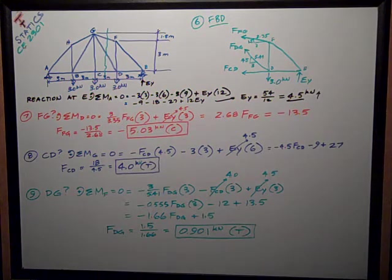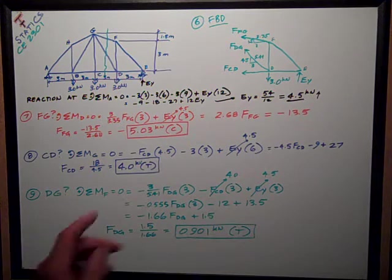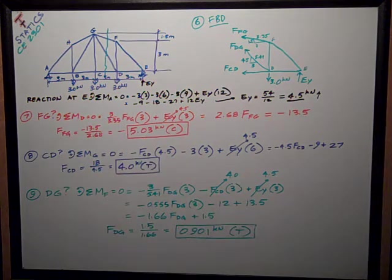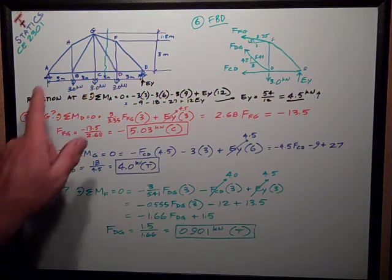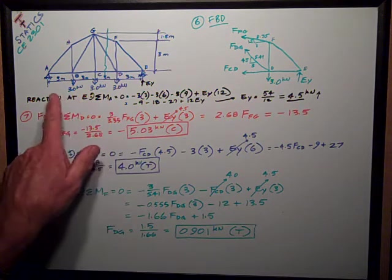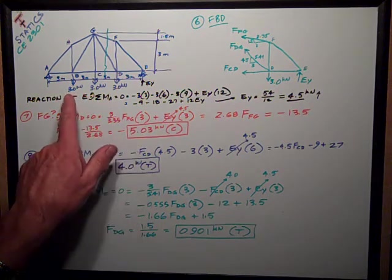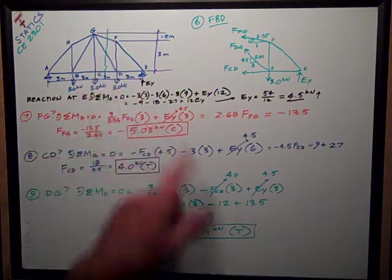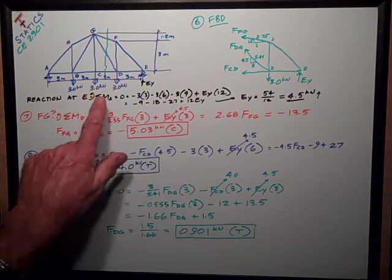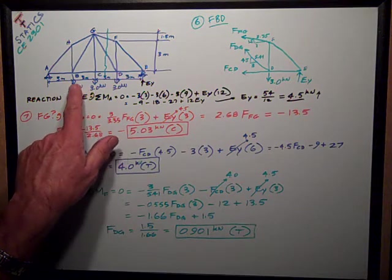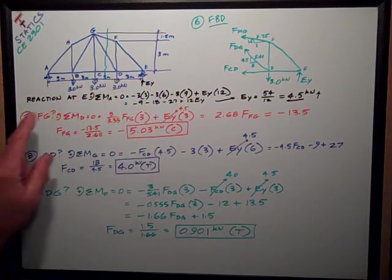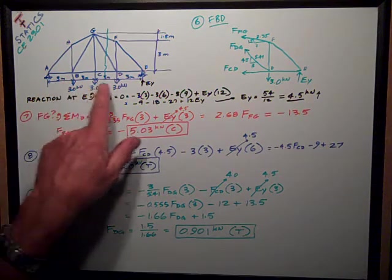It was a simple truss, and we're supposed to solve it by the method of sections. Here's the geometry and the loadings. This is a composite of all three test versions. So we've got three kilonewtons at these points B, C, and D, all three meters apart.